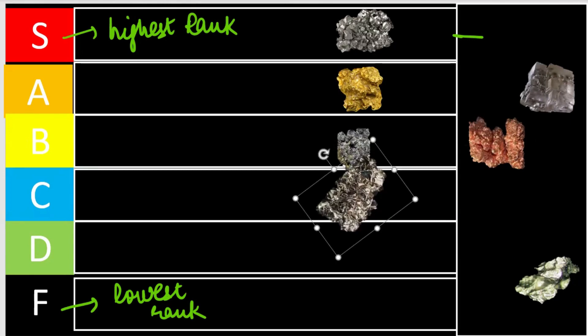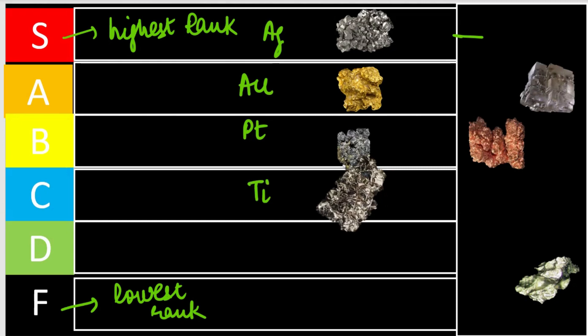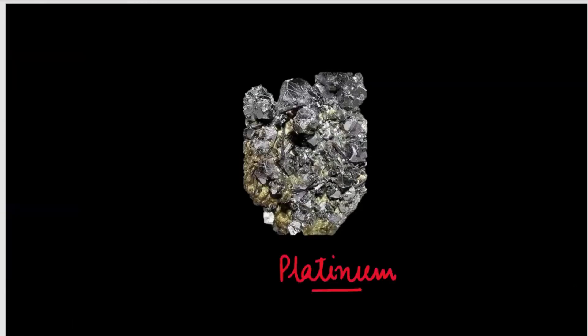So our first one is silver, the second one is gold, the third one is platinum, and the fourth one is titanium. If we talk about platinum, platinum is also used in jewelry. There will be a lot of information in this video — you will know about lustre and also about the uses of these metals.